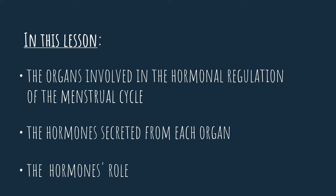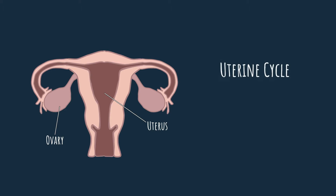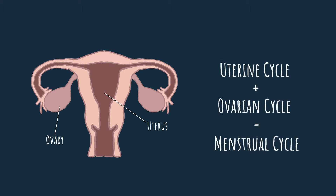You may have noticed that the title of the video is hormonal regulation of the menstrual cycle and not only the ovarian cycle. This is because the ovaries are not the only organ that goes through changes. The uterus also goes through some significant changes as it gets ready for potential pregnancy. These changes are known as the uterine cycle. The uterine cycle together with the ovarian cycle make up the menstrual cycle.